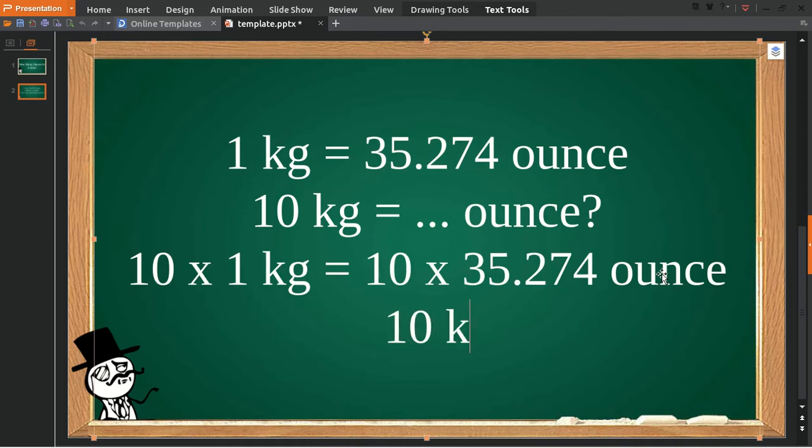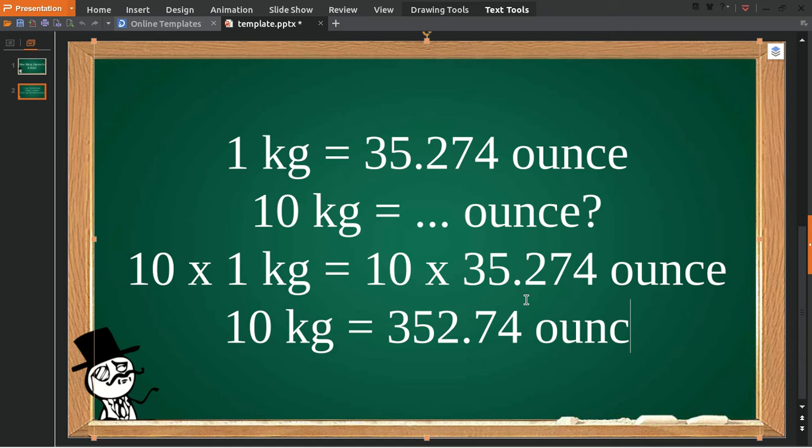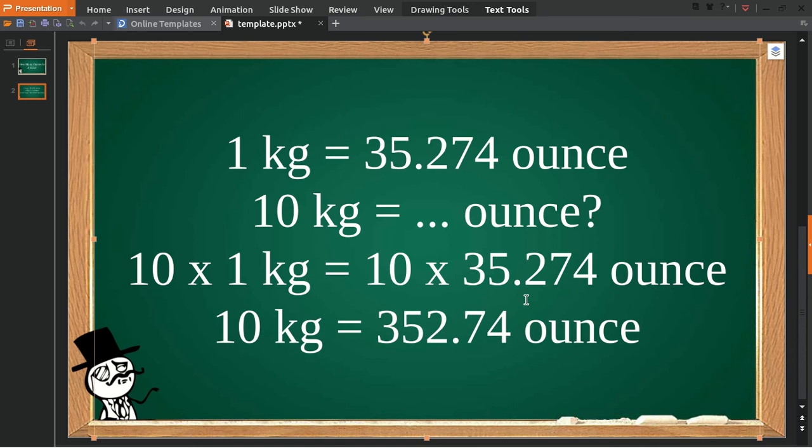Okay, so 10 kilogram is equal to 352.74 ounce. Well that's all for this question. Thank you for watching, see you again.